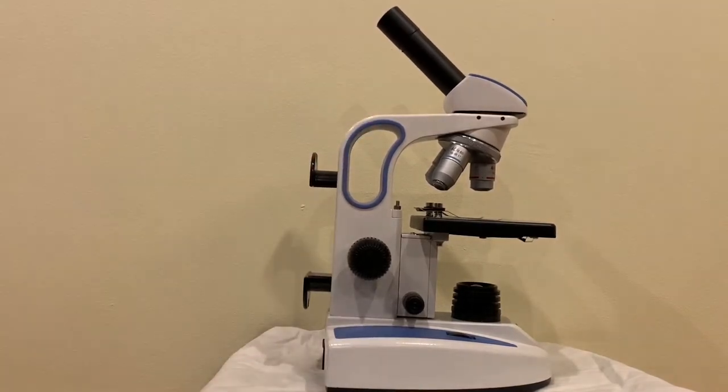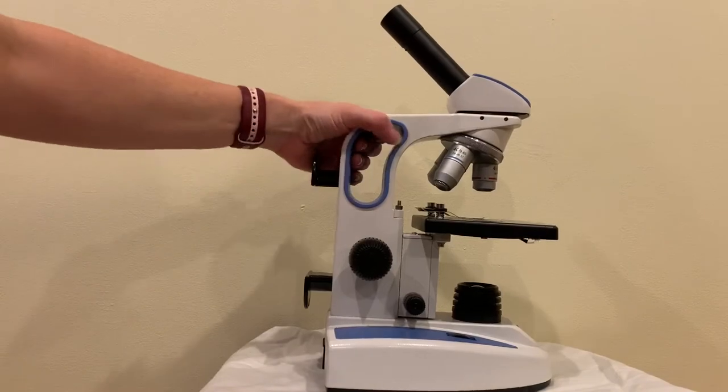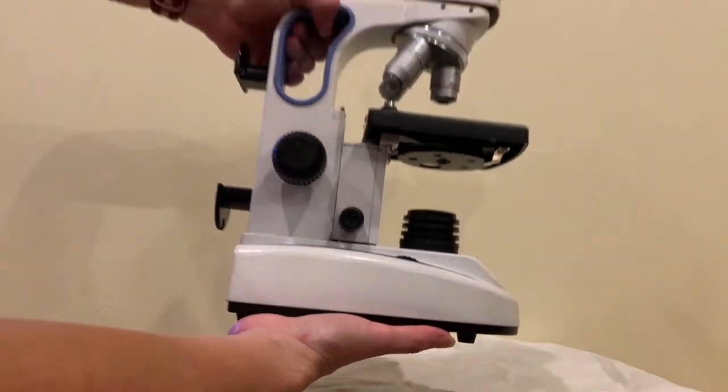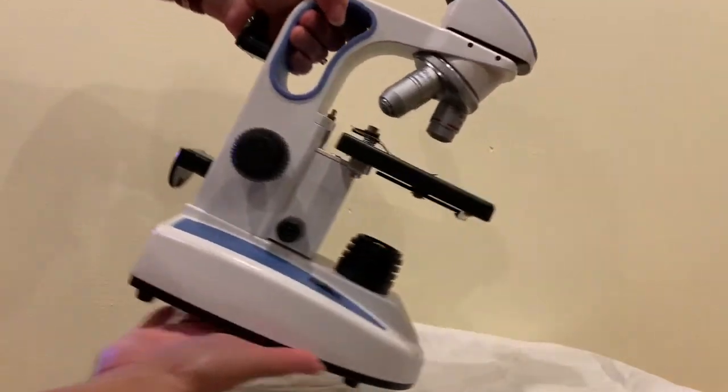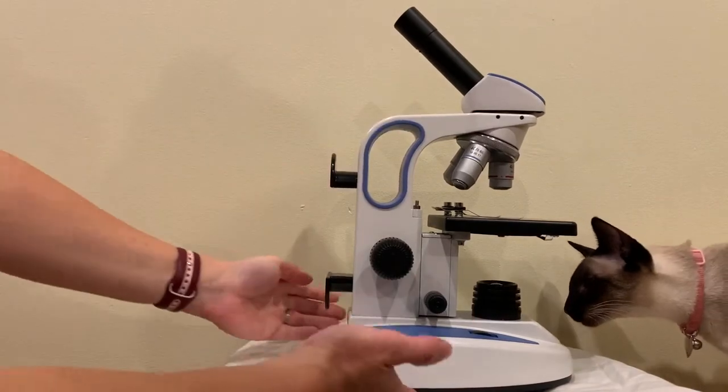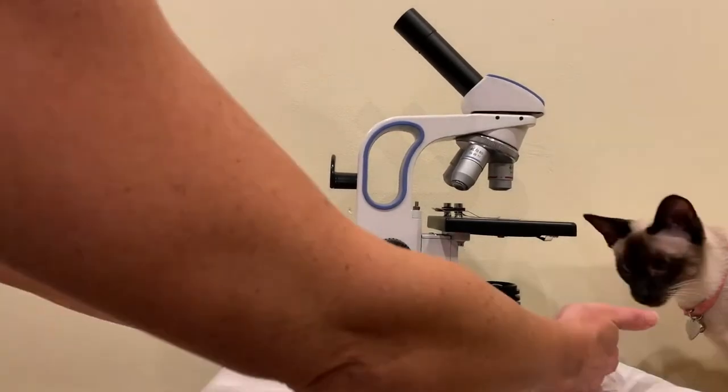If we want to move the microscope, we would pick it up from the arm and the base and move it around like this. We do not fling around the microscope, and when we place it down we make sure that all four feet are on the table.